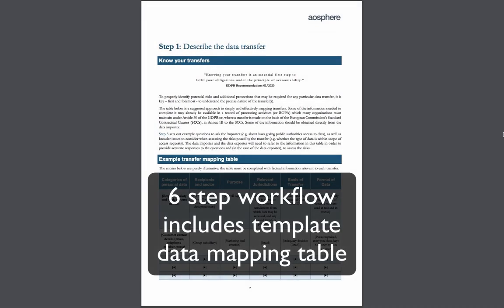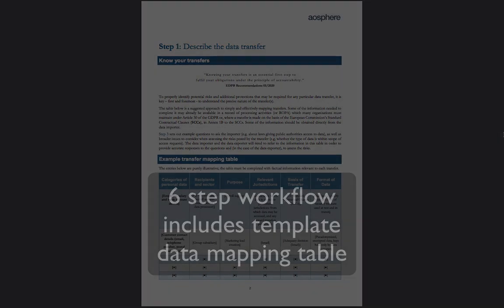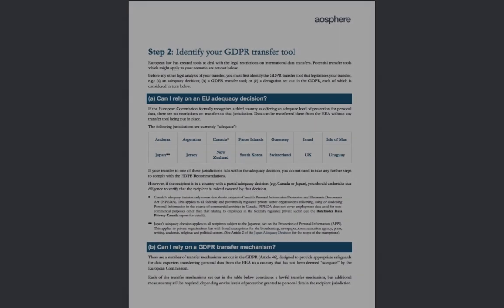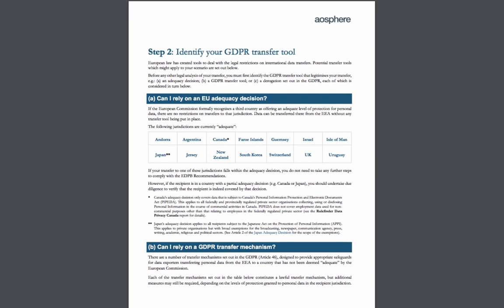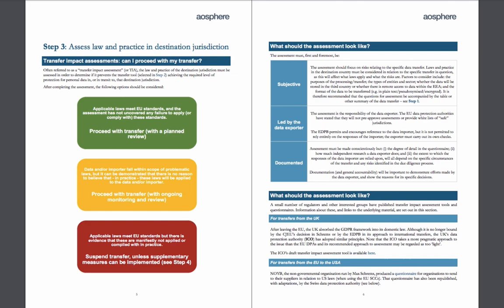The six-step workflow, which takes a user through practical analysis of European recommendations on data transfers, includes a template data mapping table to identify and document the precise nature of relevant transfers, questions and materials to help identify the relevant GDPR transfer tool applicable to your scenario, and considered analysis, guidance, and links to additional resources to support the completion of transfer impact assessments.